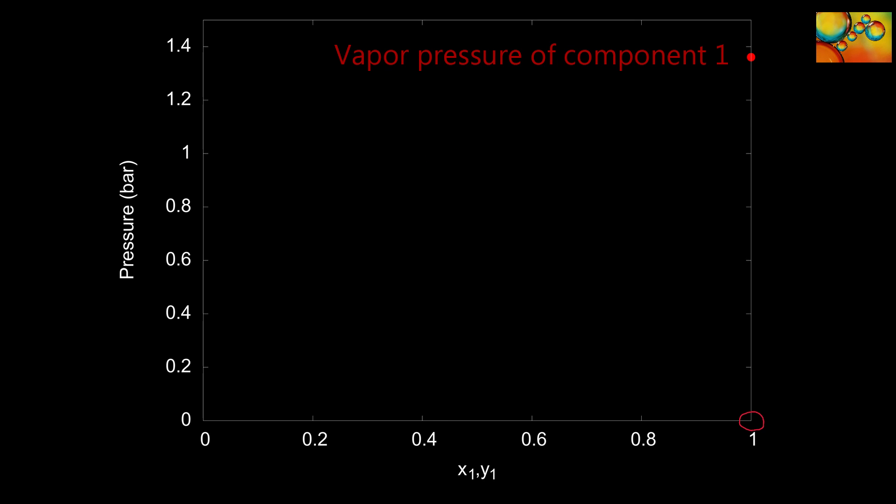We start by plotting the vapor pressure of component one, n-pentane. It's the red dot on the upper right-hand side of the diagram, located at the position where the mole fraction of n-pentane is equal to one. The next question is how to represent the mole fraction of n-heptane, which is component two, in a scale meant to represent the mole fraction of n-pentane.